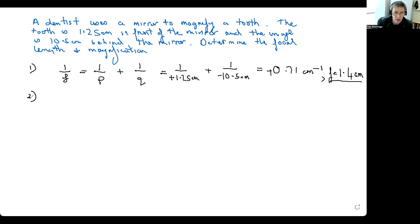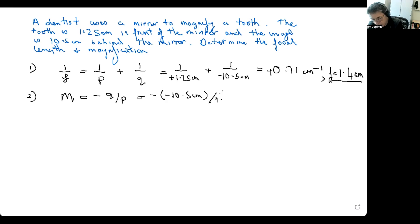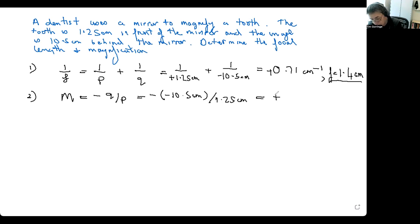Part two asks for the magnification. Magnification is easy with the magnification equation — it's simply the negative ratio of image distance to object distance: M = −Q/P. The minus sign is important, as is the sign on the image distance. So M = −(−10.5 cm) / (1.25 cm). The centimetres cancel, giving a magnification of positive 8.4. The image is more than eight times bigger — which is what the dentist wanted — and it's upright, the same orientation as the tooth itself.